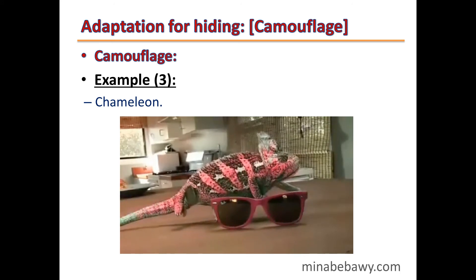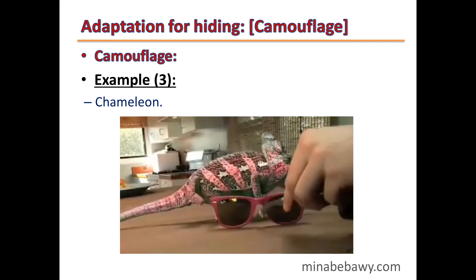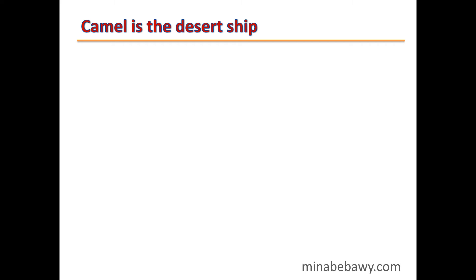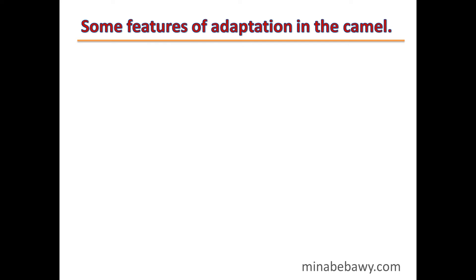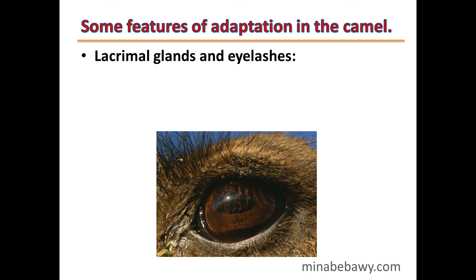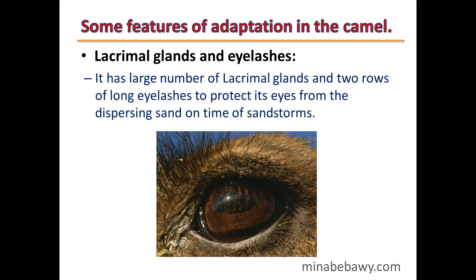The chameleon has a great ability to change its color. The camel — the ship of the desert — contains all kinds of adaptations that help it live in the harsh conditions of the desert. Some features of adaptation in the camel include large lacrimal glands and two rows of long eyelashes to protect its eyes from dispersing sand during sandstorms.